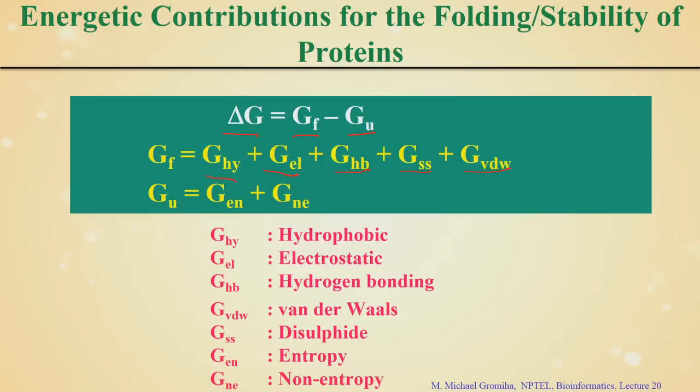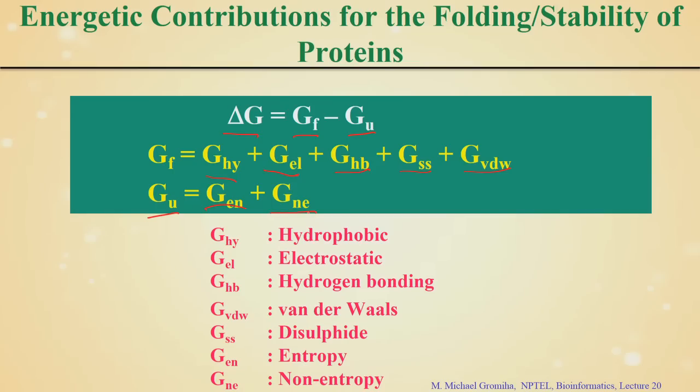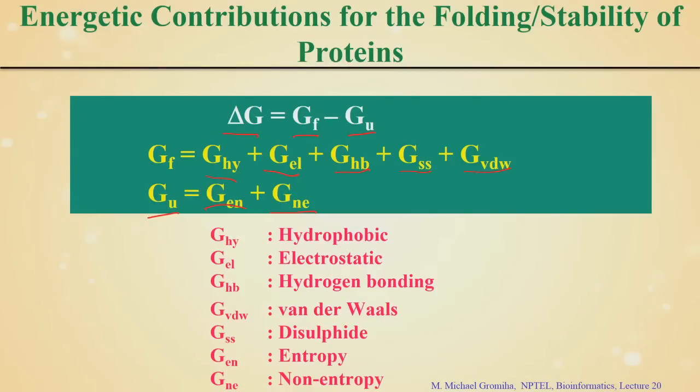The unfolded state is not completely random — there may be some interactions present which are also available in the folded state, called non-entropic terms. For example, hydrogen bonds present in the unfolded state. Now let us see how we estimate all these interactions from protein 3D structures. The parameters we use include surrounding hydrophobicity, different types of interactions, solvent accessibility, and contacts.